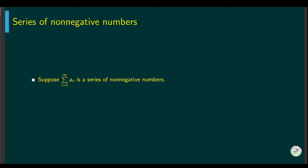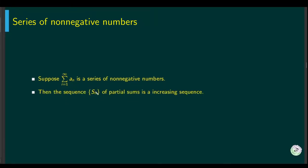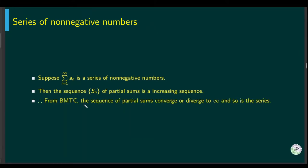Let's focus on series of non-negative numbers. If each term a_k is either 0 or positive, the first observation is that the partial sums are monotonically increasing. Therefore, from the monotone convergence theorem, such a series must either converge or diverge to infinity — it cannot oscillate or go to negative infinity.